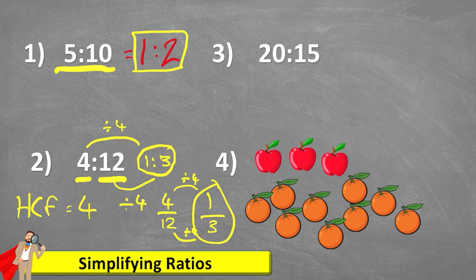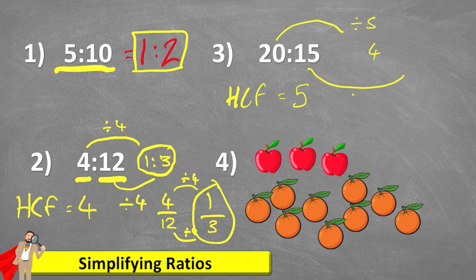Question 3 now. We have 20 to 15. So again, just looking for that highest common factor. The highest common factor of 20 and 15 is 5. Therefore, 20 divided by 5 is 4, and 15 divided by 5 is 3. So 20 to 15 is equivalent to saying 4 to 3.